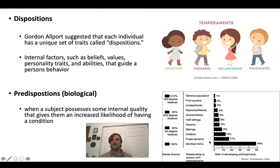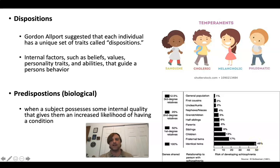I want to look at the role of biology here. This chart shows the relationship to a person with schizophrenia and the risk of developing schizophrenia yourself. Forty-eight percent of identical twins develop it — pretty amazing, and significantly higher than for any other group. Fraternal twins show 17%, and just children show 13%. We can learn a lot from the study of identical twins.